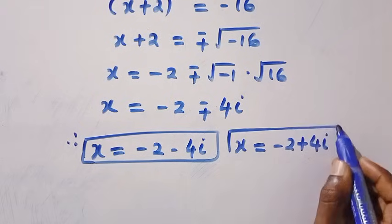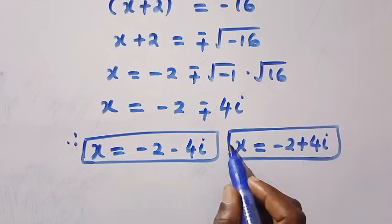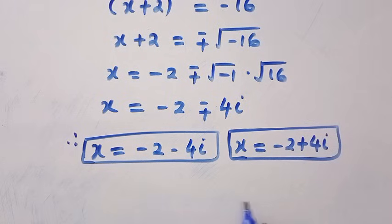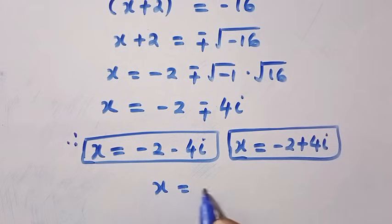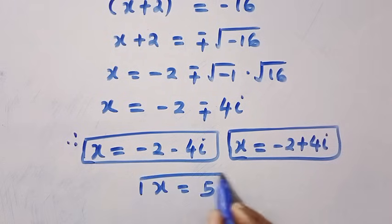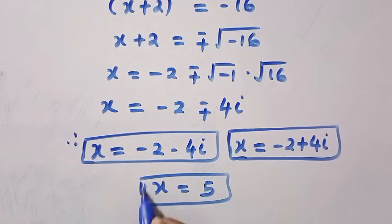So in total, our three solutions are x equals 5 as the real solution, and x equals negative 2 minus 4i, and x equals negative 2 plus 4i as the complex solutions. Thanks for watching and see you in the next video — never stop learning, bye bye!